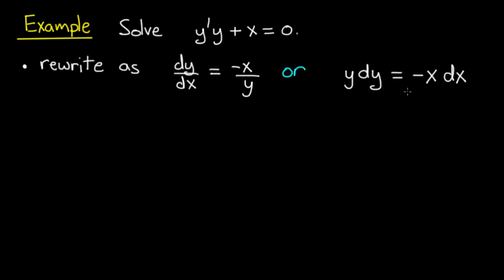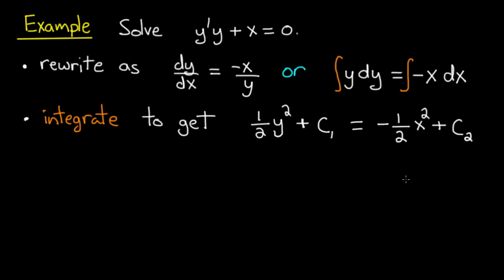So we have y dy equals minus x dx. Now these things were born to be integrated, so let's integrate them. So we have the integral of y with respect to y, integral of y dy, equals the integral of minus x with respect to x, integral of minus x dx.